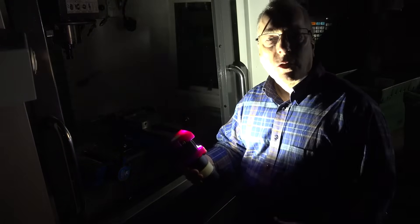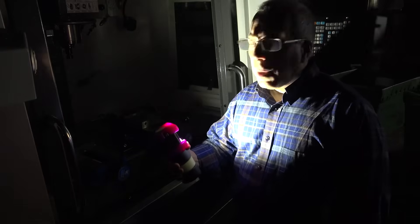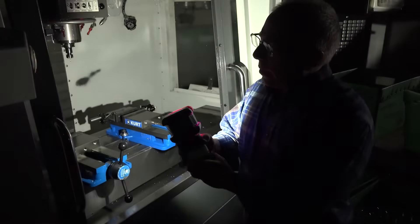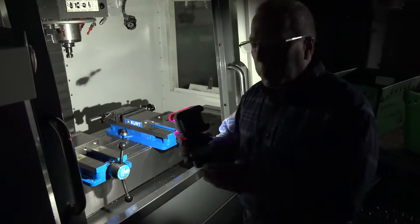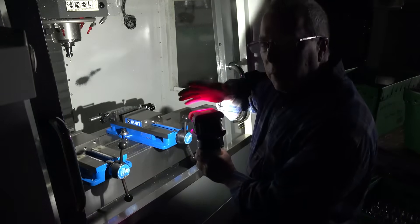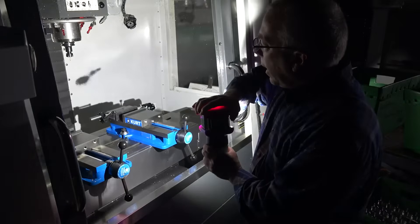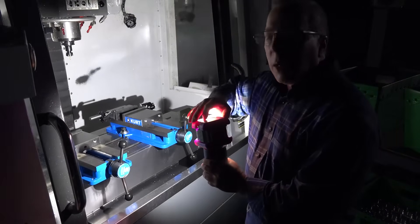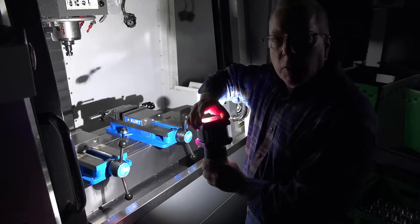This light is constructed to be explosion-proof, Class 1, Division 1 certified. It has the ability to switch between a visible COB LED at about 5700 Kelvin with multiple intensities, as well as being able to switch to a UVA emission.